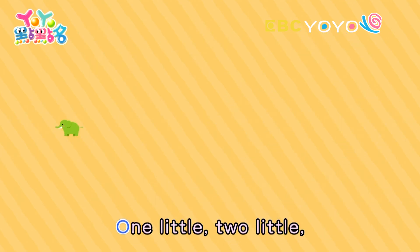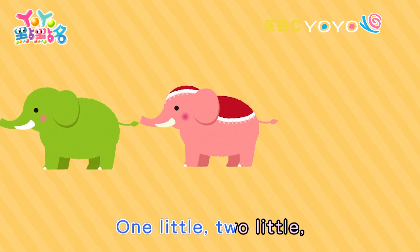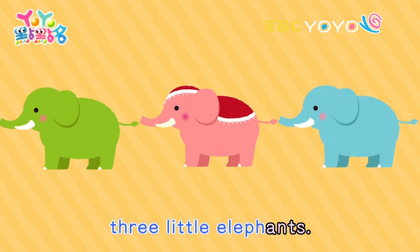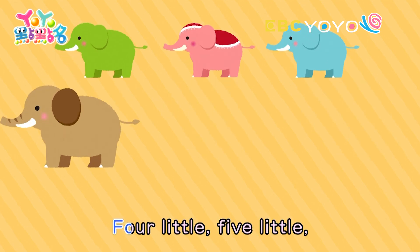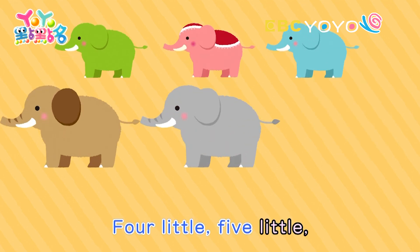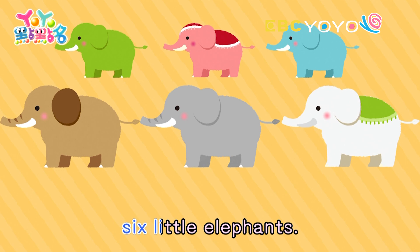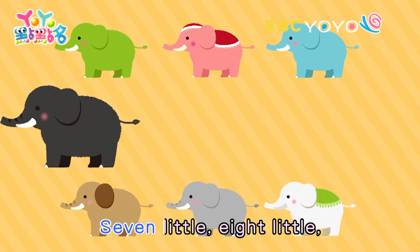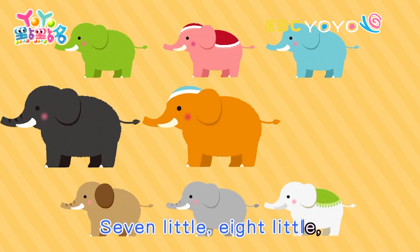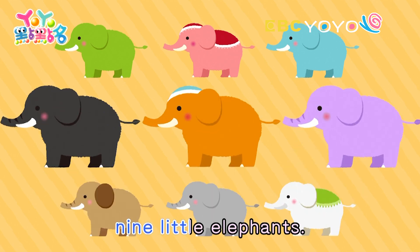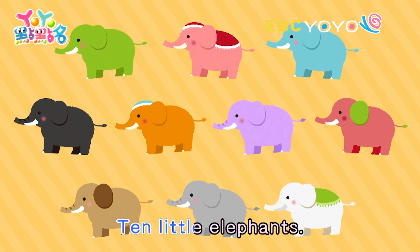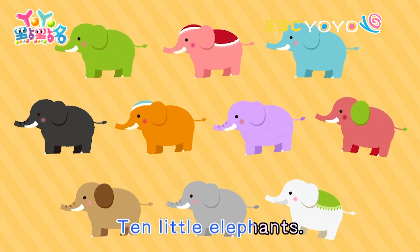One little, two little, three little elephants. Four little, five little, six little elephants. Seven little, eight little, nine little elephants. Ten little elephants.